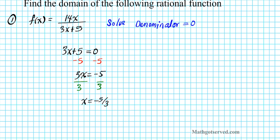What does this result mean? This result is telling us that if we plug in negative 5 over 3 for x into this expression, we'll have a zero in the denominator, which results in an undefined output. So our answer is the set of all real numbers except x equals negative 5 over 3. Our domain for f of x is the set of x such that x cannot equal negative 5 over 3, because it causes the denominator to have a zero value resulting in an undefined output for the entire function.